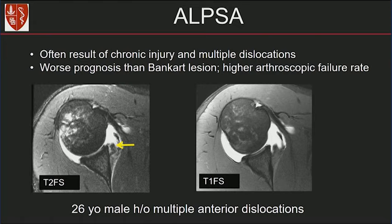The ALPSA lesion often results from chronic injury and multiple dislocations. It has a worse prognosis than the Bankart lesion and a higher arthroscopic failure rate. Here's a patient with multiple anterior dislocations — the anterior inferior labrum is medially displaced, the periosteum is intact but stripped, and there's a lot of scar tissue with dark signal intensity on the T1 fat-suppressed image. This is a chronic ALPSA lesion. For reporting: describe the tear detachment of the anterior inferior labrum and whether the periosteum is intact, rather than naming these lesions.